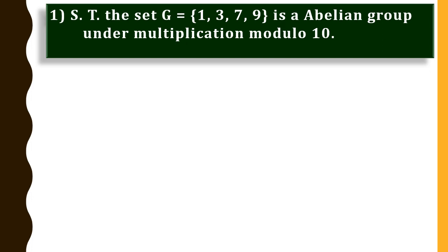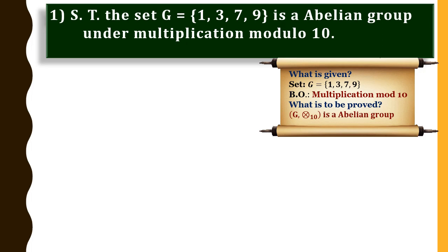Let us consider the first problem. Show that the set G consisting of elements 1, 3, 7, 9 is an abelian group under multiplication modulo 10. Understand carefully what is the given set, what is the binary operation, and what is to be proved. The set G is {1, 3, 7, 9}, the binary operation is multiplication modulo 10, and our aim is to prove G is an abelian group under multiplication modulo 10.